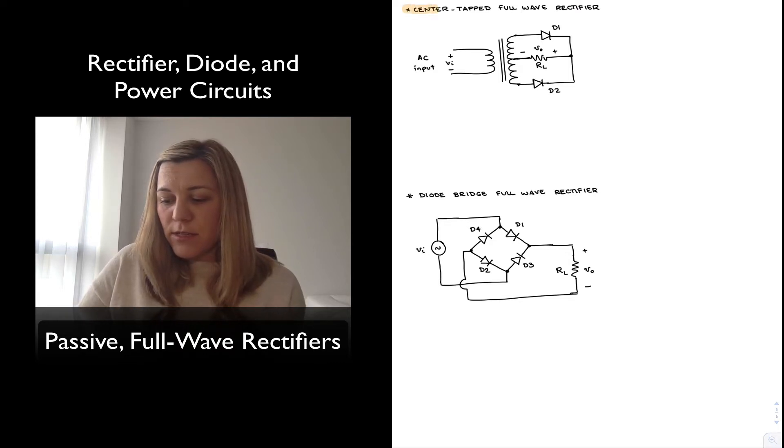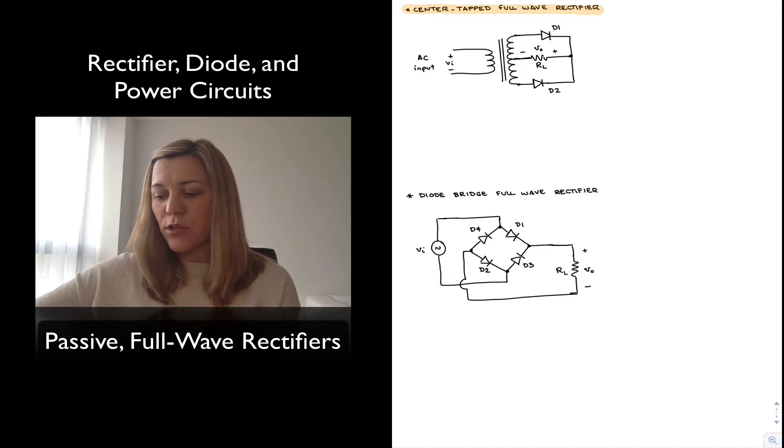The first one, the center-tapped full wave rectifier, is comprised of a transformer, a center tap transformer in this case, and two diodes, typically power diodes because it's a circuit used in power applications, labeled D1 and D2.